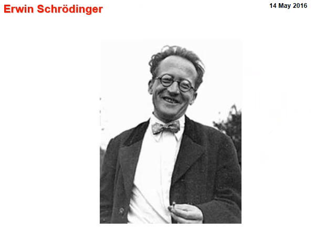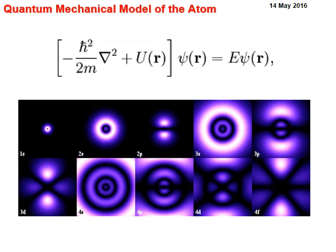Finally, in 1925, the German scientist Erwin Schrödinger, who you might be familiar with through Schrödinger's cat, proposed the Schrödinger equation. This allowed the electrons in the atom to be analysed quantum mechanically. Rather than being fixed in one place, they were in a probability cloud.